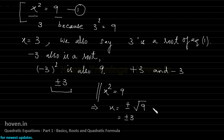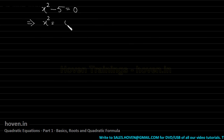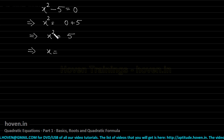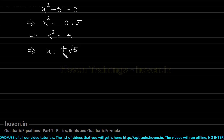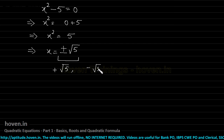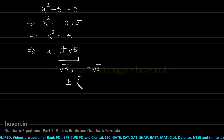Take another example. Suppose somebody writes x² − 5 = 0. This can be solved by moving 5 to the other side: x² = 5, which implies x = ±√5. This represents two numbers: +√5 and −√5. So the two roots of this equation are ±√5.